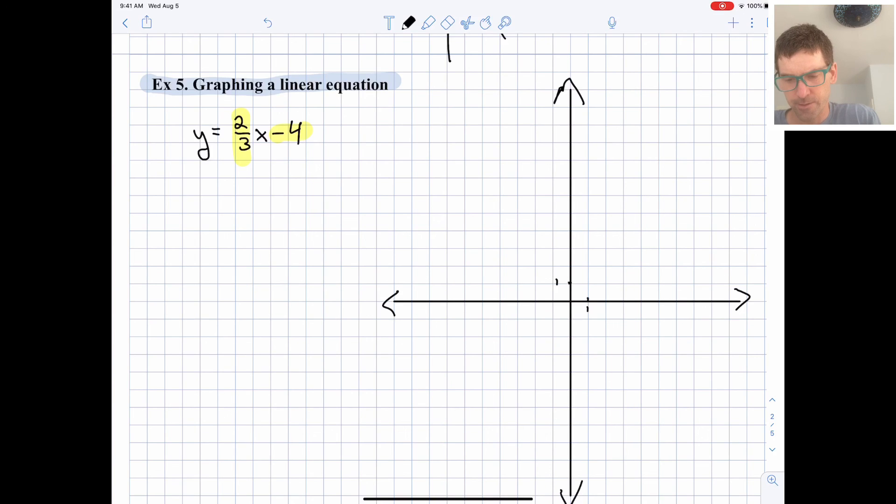And then our slope is 2 thirds, this is what makes fractions so nice, we just go up 2 over 3, up 2 over 3, up 2 over 3. We can do that as many times as we feel like we want to. We can also go down 2 and over 3 in the other direction.